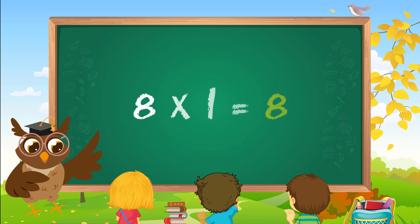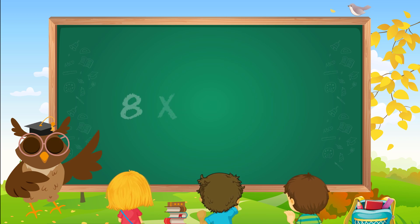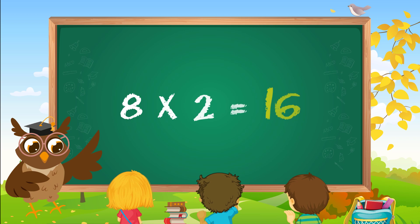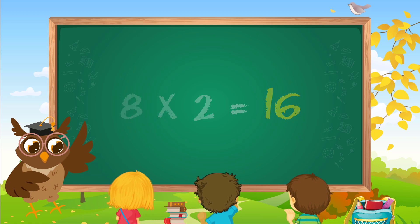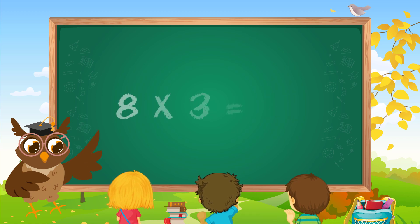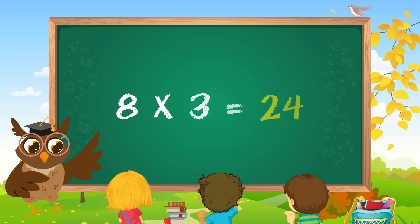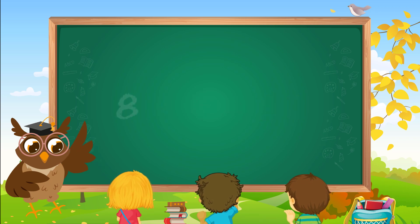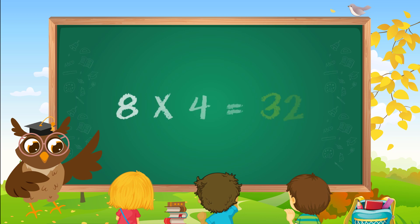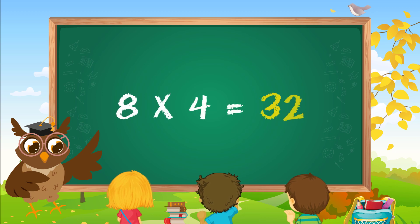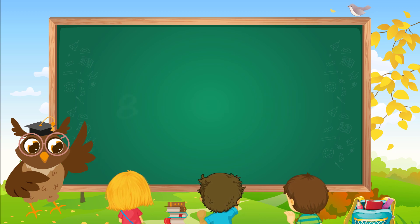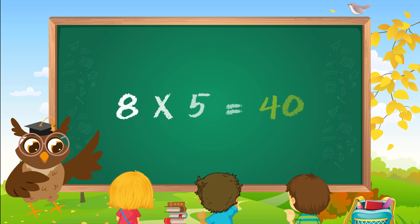Eight ones are eight. Eight twos are sixteen. Eight threes are twenty-four. Eight fours are thirty-two. Eight fives are forty.